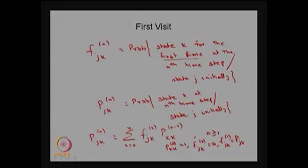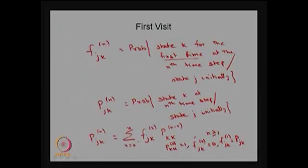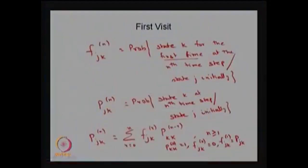For n greater than or equal to 1, it is the combination of the first-time probability with the not-necessarily-first-time n-minus-r step transition probability. All possible events together give the final overall probability. Here we have used the total probability rule as well as the Chapman-Kolmogorov equation for the time-homogeneous discrete-time Markov chain to obtain the relation between p_{jk}^(n) and f_{jk}^(n).